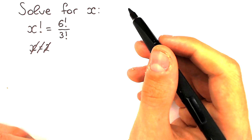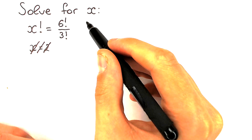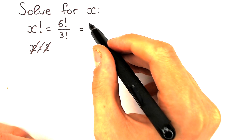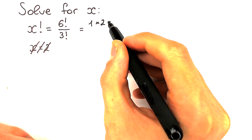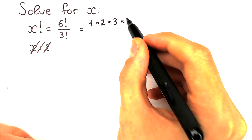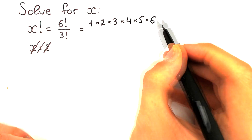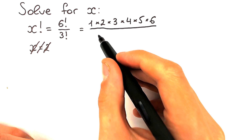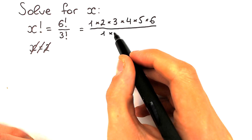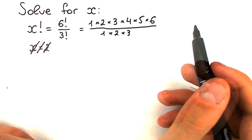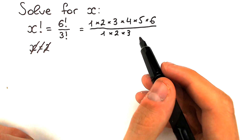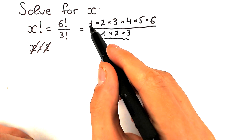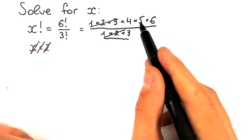For solving this question we should know what a factorial is. A factorial is a product from 1 up to that number. So in our case, 6 factorial equals 1 times 2 times 3 times 4 times 5 times 6, and we divide all of this by 3 factorial. We know that 3 factorial equals 1 times 2 times 3. Since we have a product throughout, we can easily cancel the expression 1 times 2 times 3 in both the numerator and denominator.